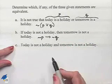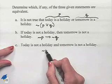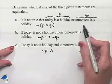And part C: Today is not a holiday, that would be the negation of P, and tomorrow is not a holiday, would be the negation of Q.